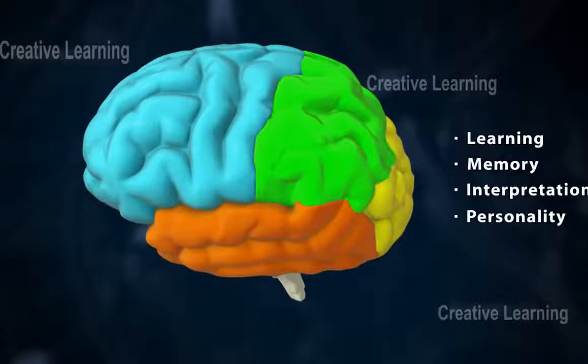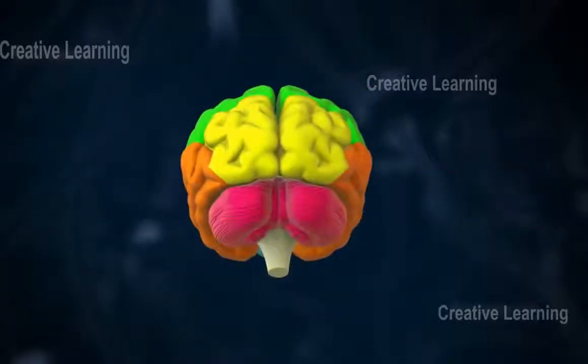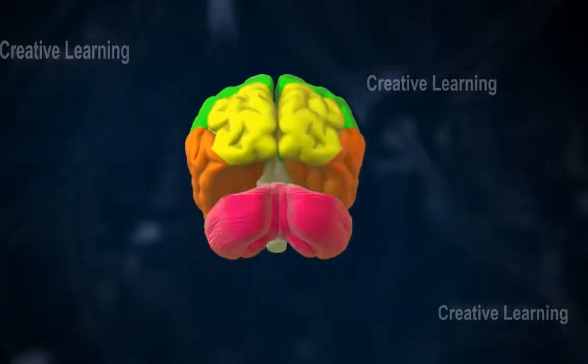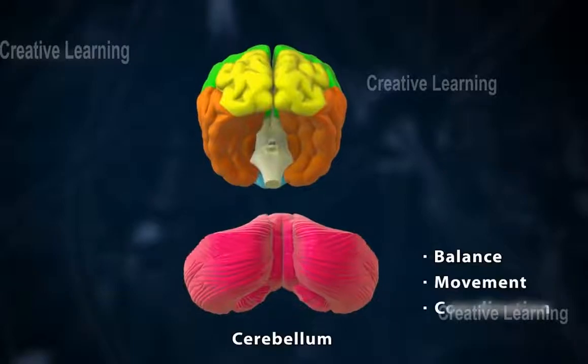The cerebellum is located in the back of the brain, just below the cerebrum. It controls balance, movement, and coordination.